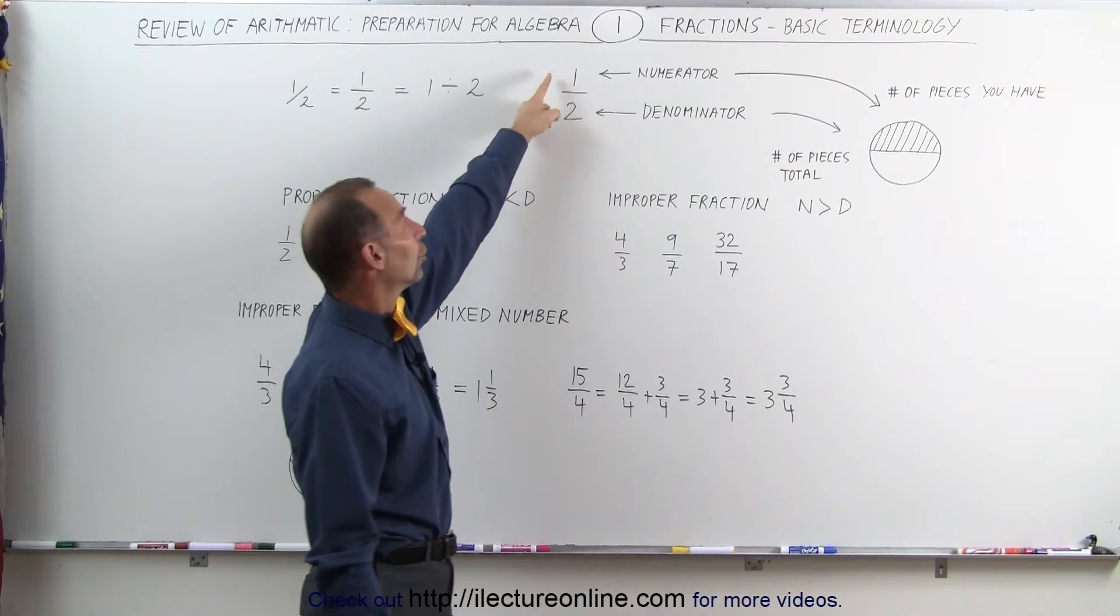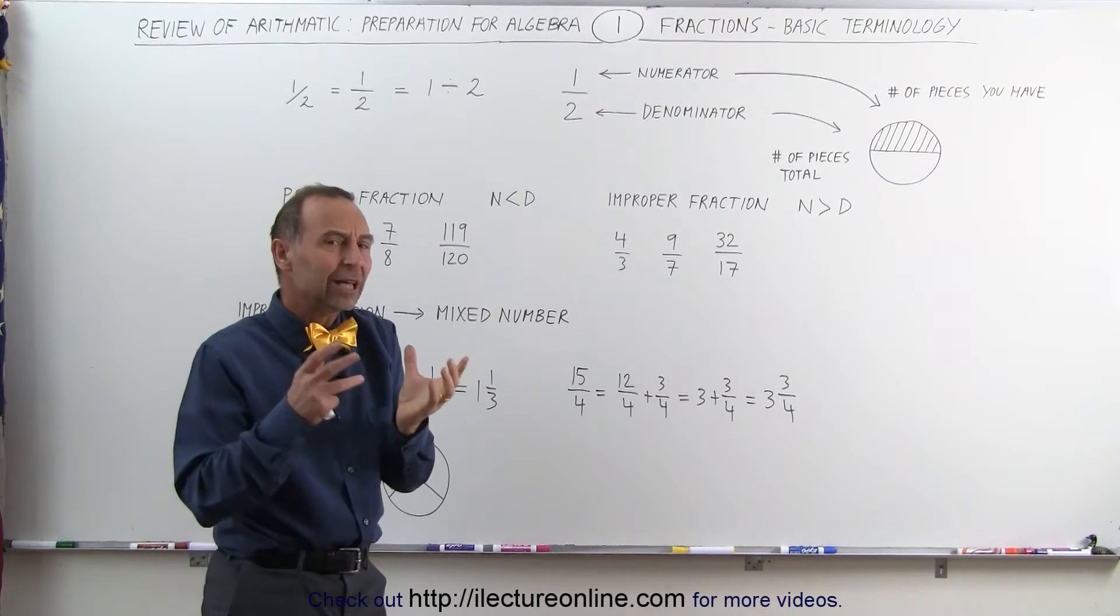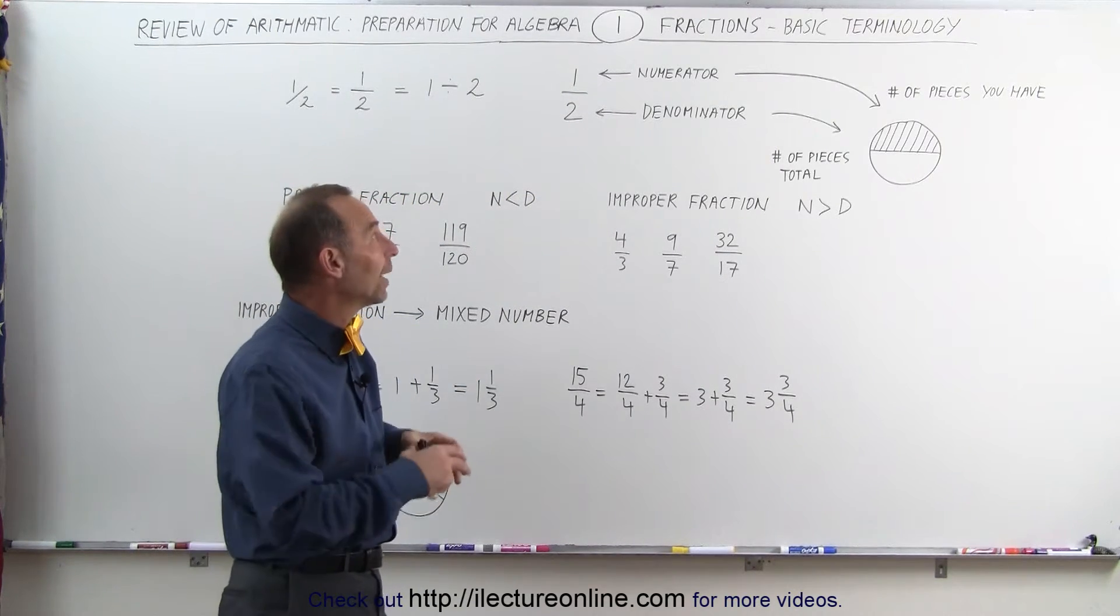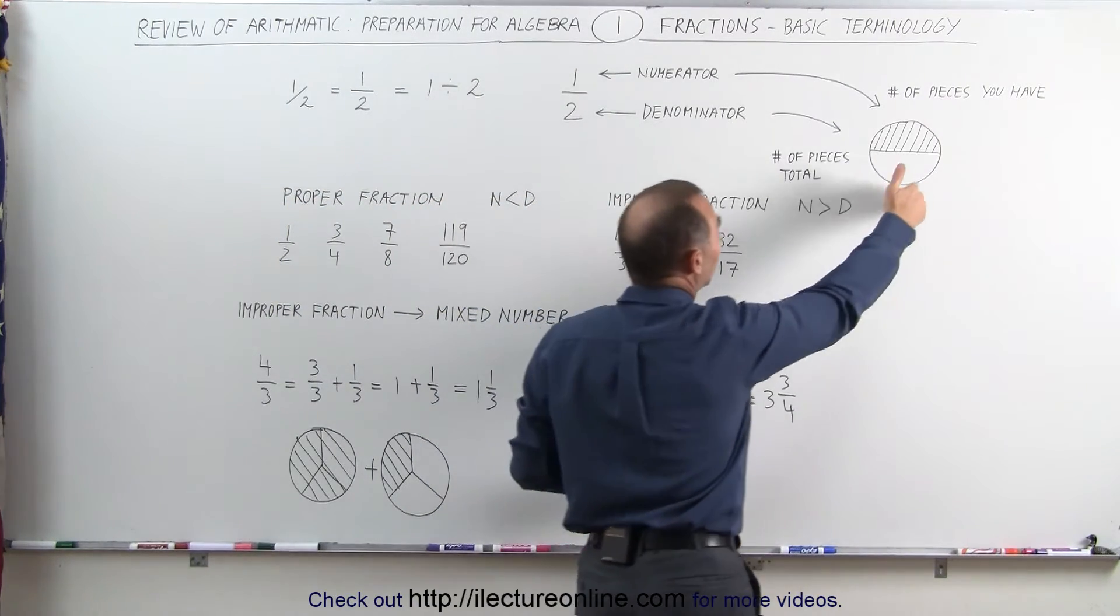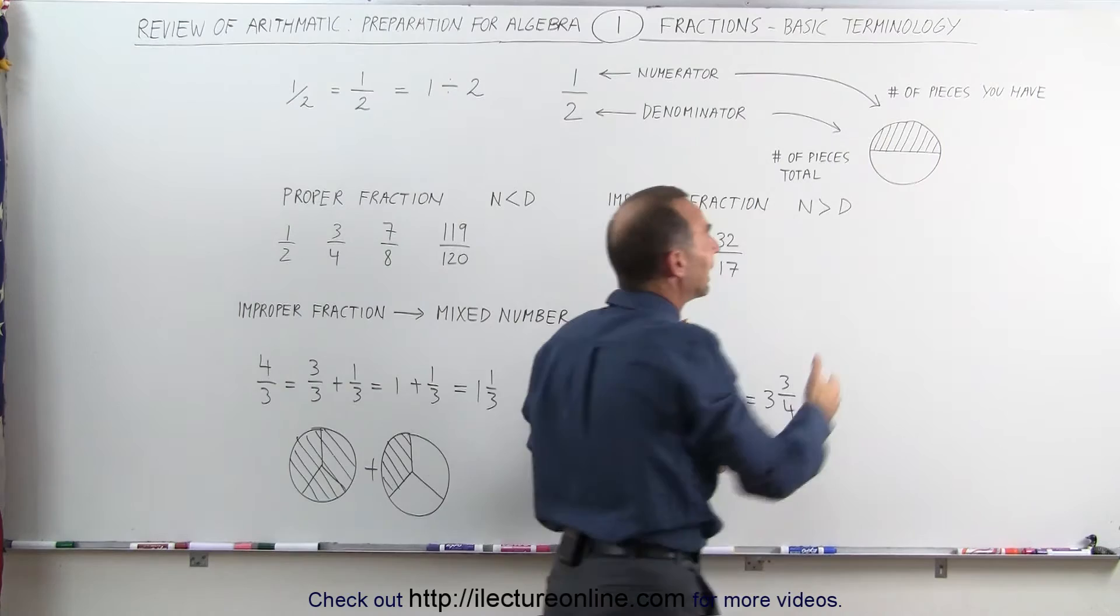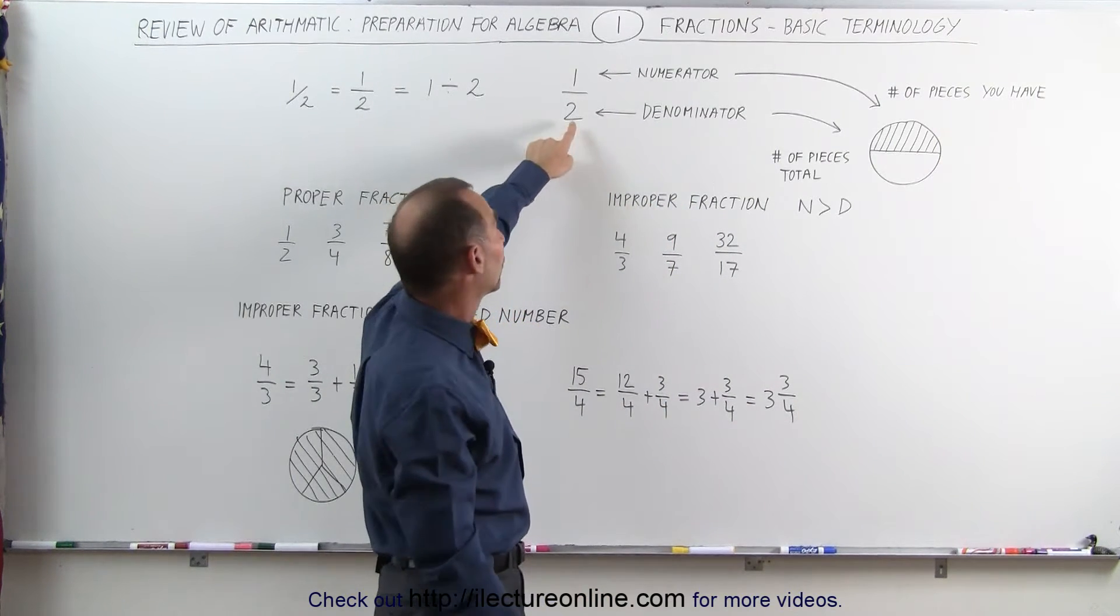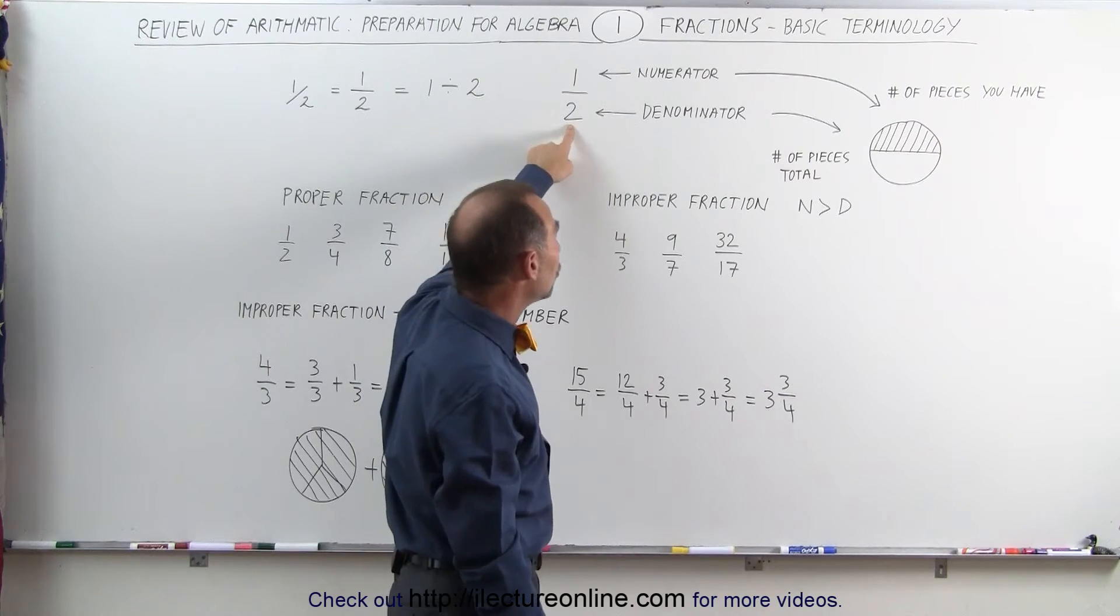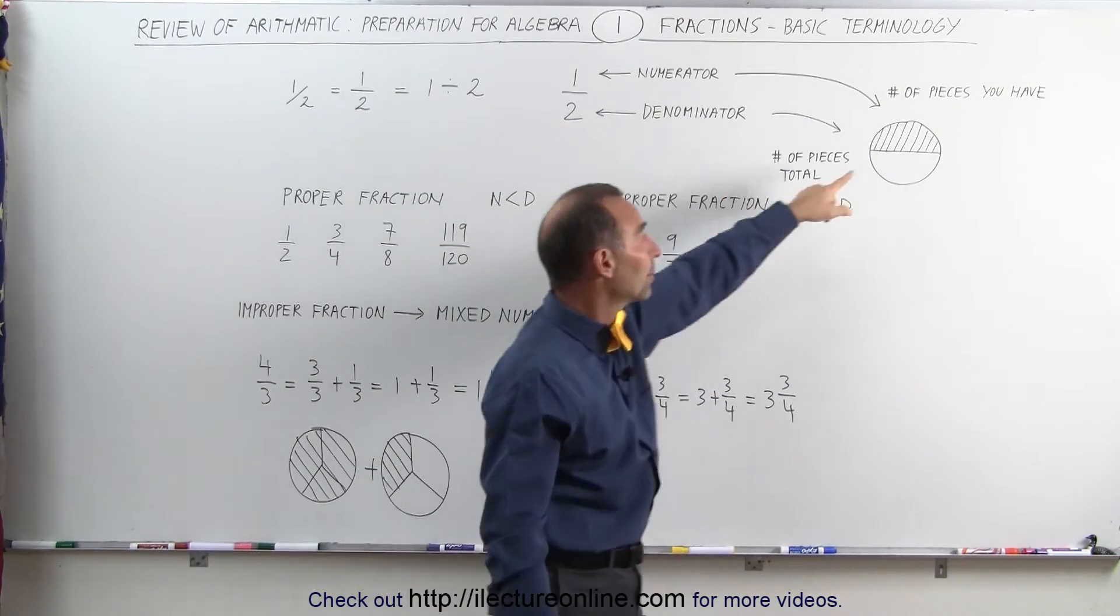The number at the top is called the numerator. The number at the bottom is called the denominator. If you want to get a visual representation of what a fraction is, think of a circle, for example, and you're going to divide the circle into as many pieces as is equal to the number in the denominator. So if the denominator says it's two, you take a circle and divide it into two pieces. If it's three, you divide it into three pieces.